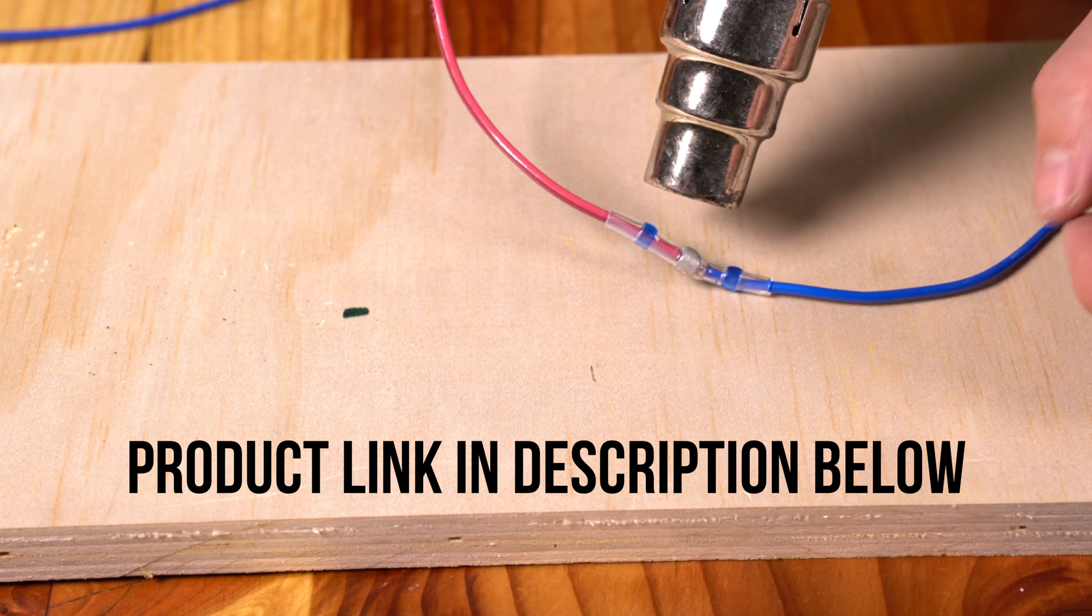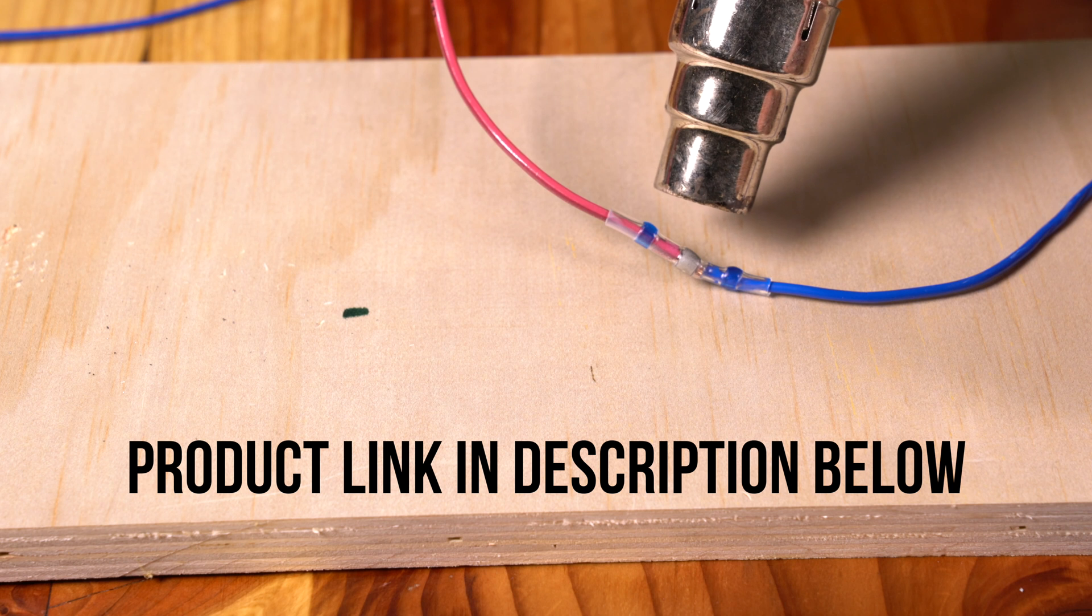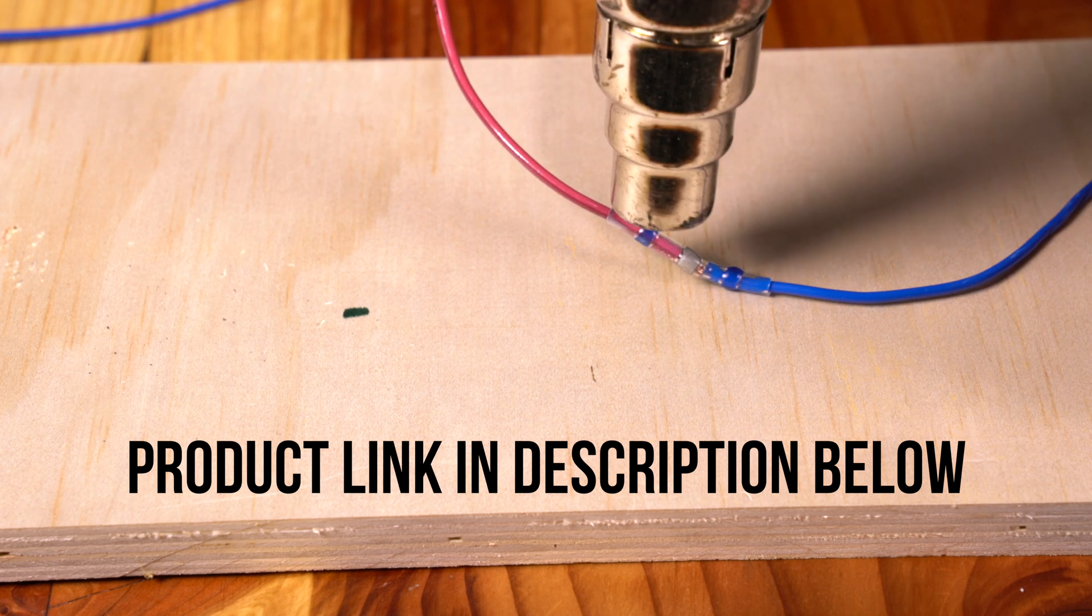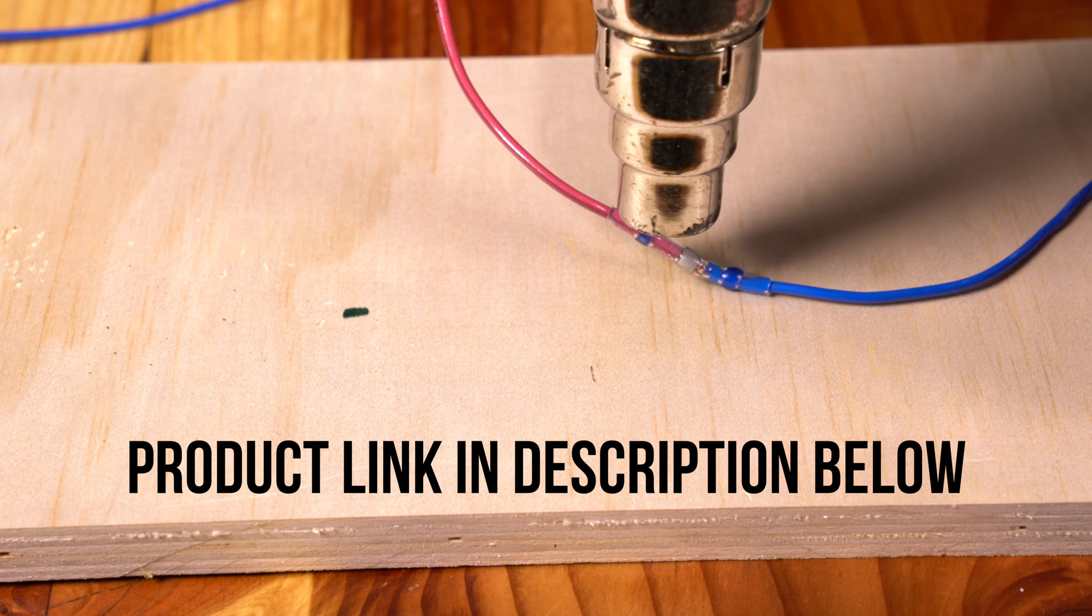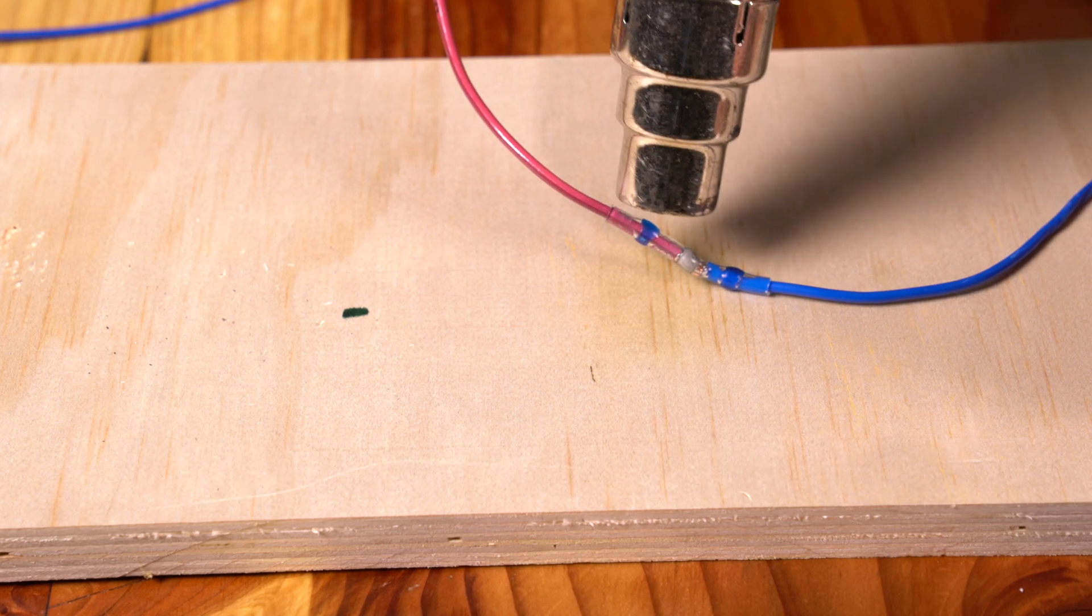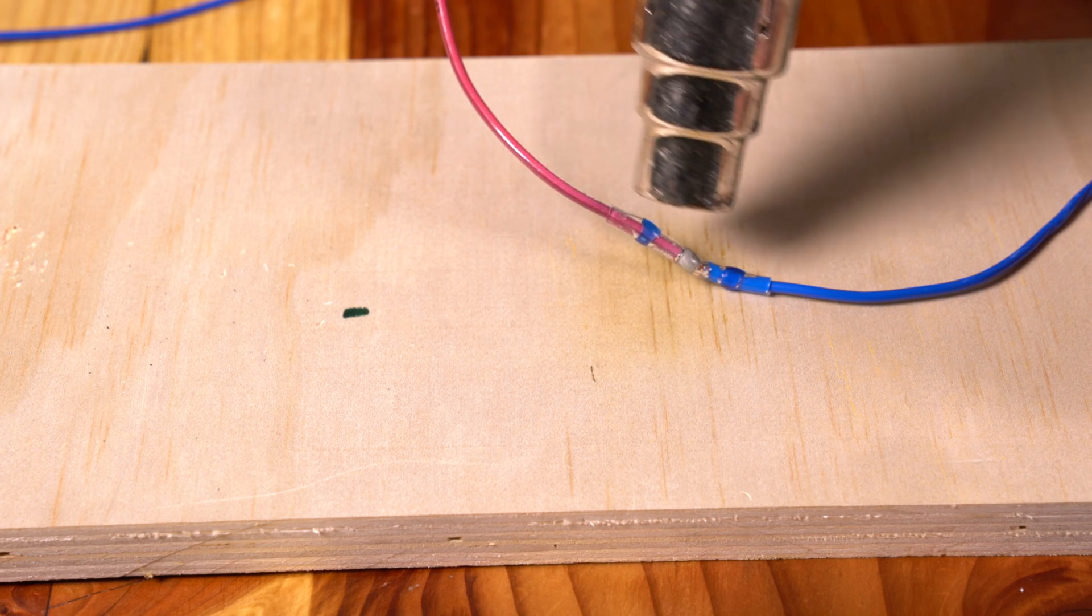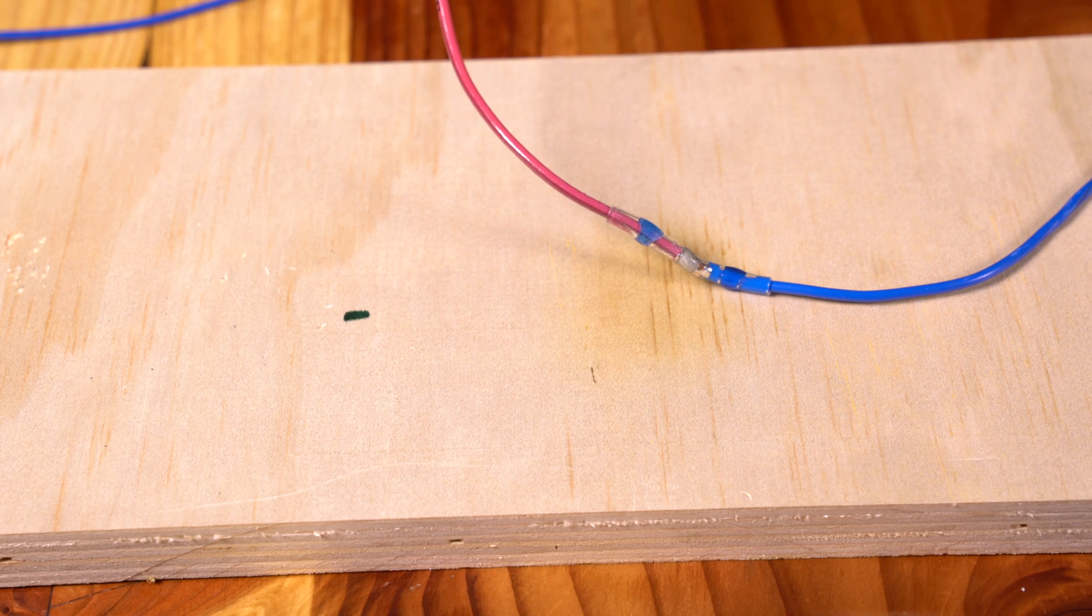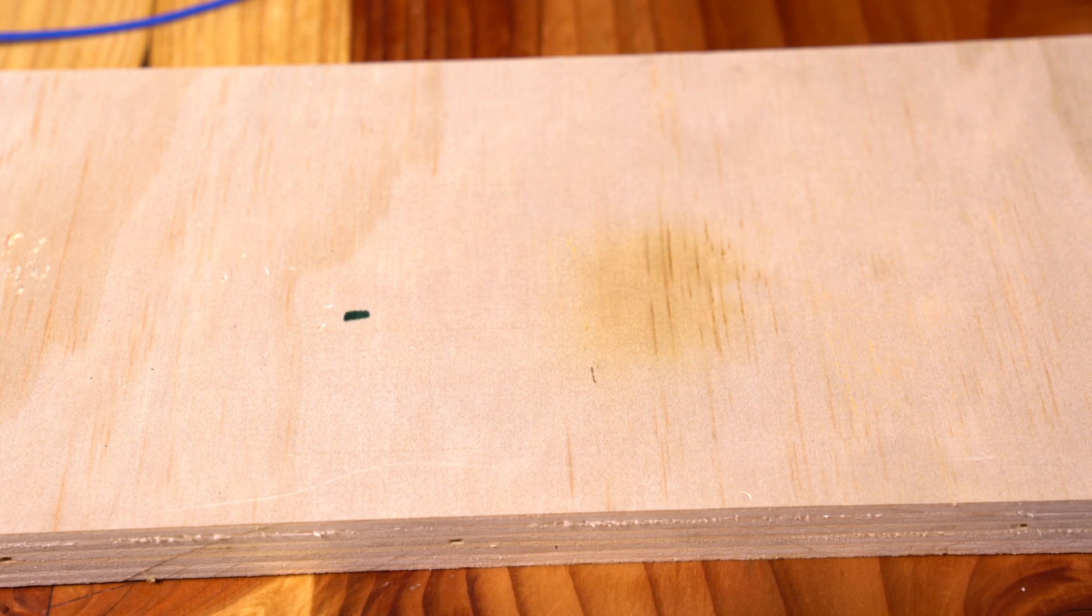So this is definitely the way you want to go if you're going to wire something that could potentially get exposed to water or humidity. I'm just using a basic heat gun I got from Home Depot. I think it cost me like 20 or 30 bucks back in the day. Gets up to like a thousand degrees. You just got to be careful not to actually melt the wires too much.